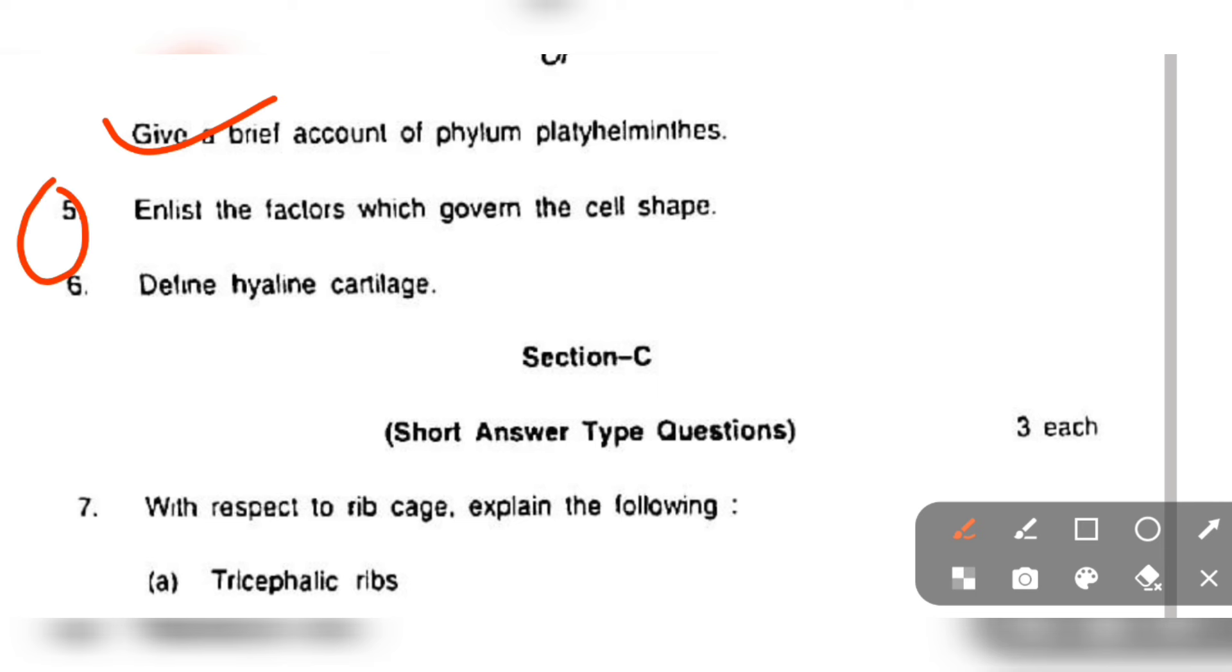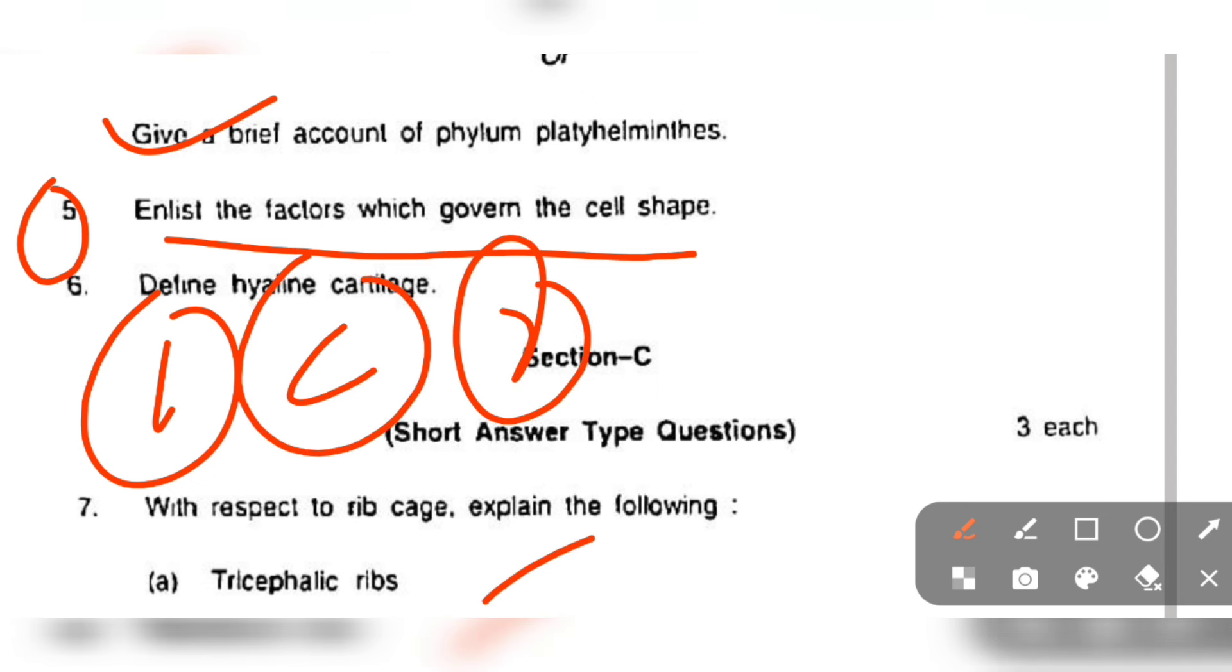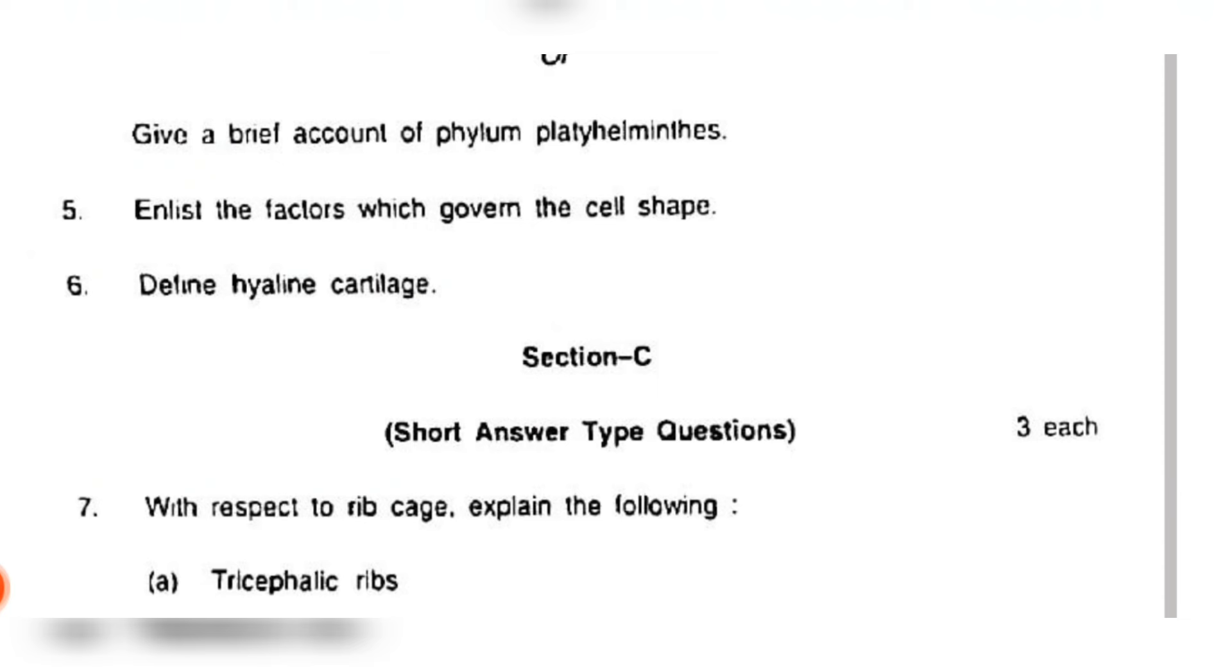Now we have question number five: list the factors which govern the cell shape. In which way the cell shape governs? Those factors you can write: cytoskeleton, the amount of water, and the state of the cell membrane.